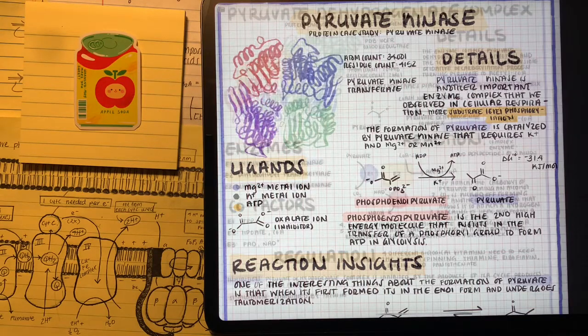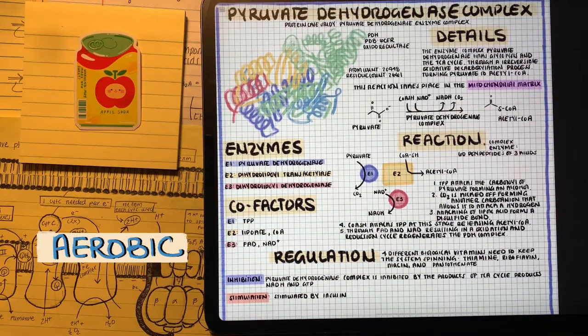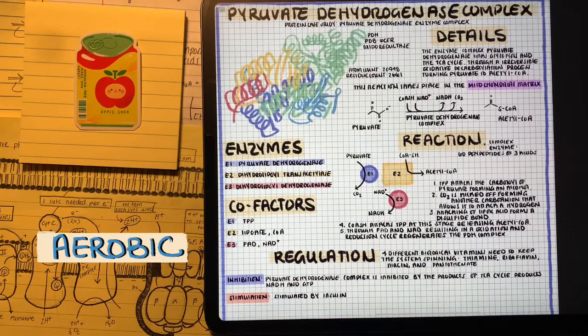After we form pyruvate, there's two courses of action, whether or not we have oxygen. So for the first pathway, we have oxygen. This is aerobic respiration.